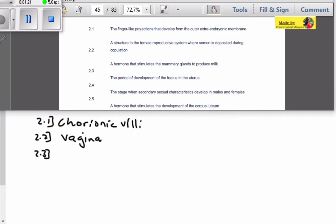And then 2.3. A hormone that stimulates the mammary glands to produce milk. Usually they don't ask this question but just know that it is called prolactin hormone.